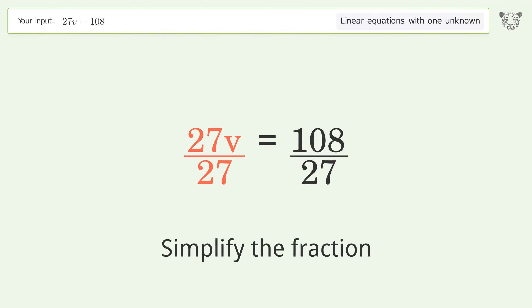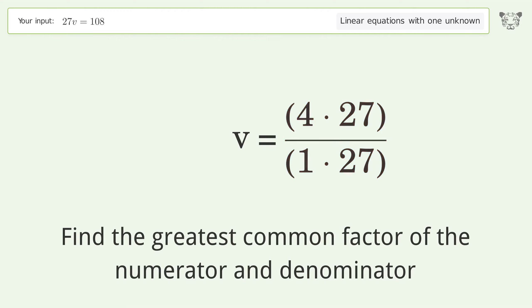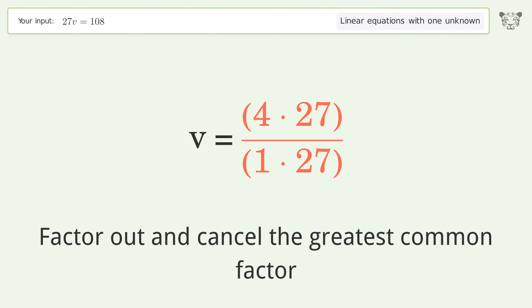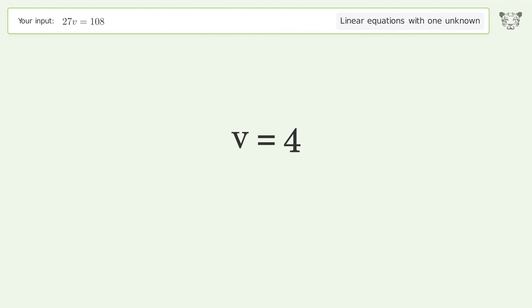Simplify the fraction by finding the greatest common factor of the numerator and denominator. Factor out and cancel the greatest common factor, and so the final result is v equals 4.